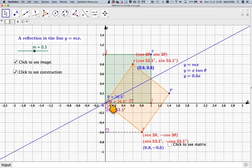And then if you do 90 minus 2 theta again, 90 minus 2 theta, you'll get this angle here being 2 theta.